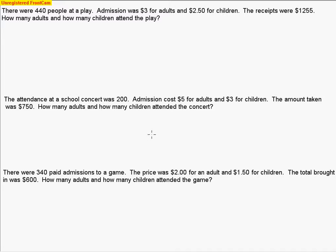Today we are going to solve admission problems, similar to coin problems that we solved yesterday. The difference is that instead of coins, values of coins, and number of coins, we have how many people attended. The value for an adult ticket and the value for a children's ticket will vary — with a coin you have the same value each time, but for admissions the value can vary. It's set up the same way: we have a quantity equation and a value equation, and that's what we're going to look for when we read the problem.